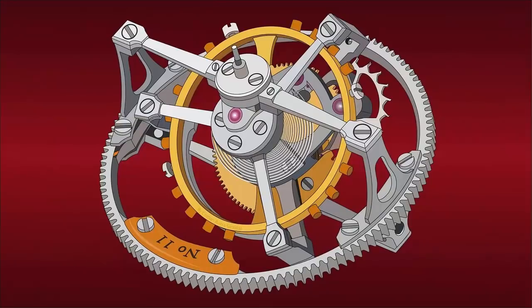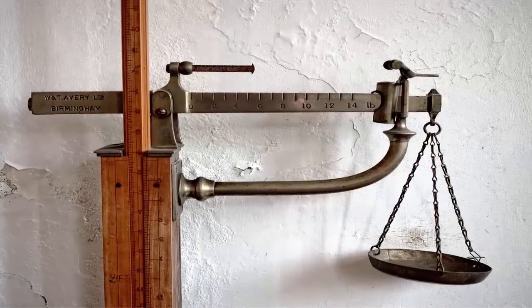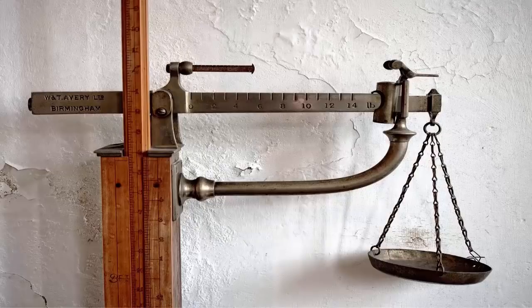These two words seem to have the same meanings for ordinary people, but these words have different meanings in science. We will explain it through a very simple example. First, we define precision and accuracy.